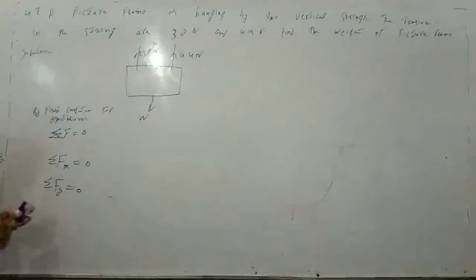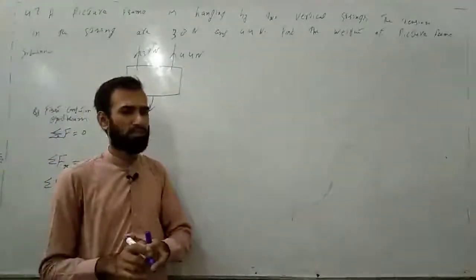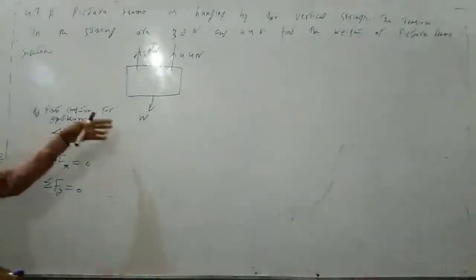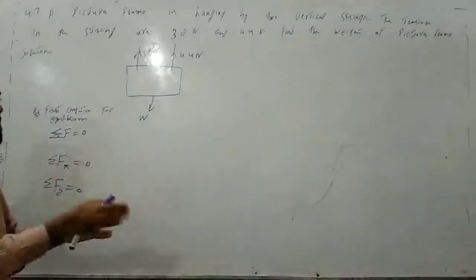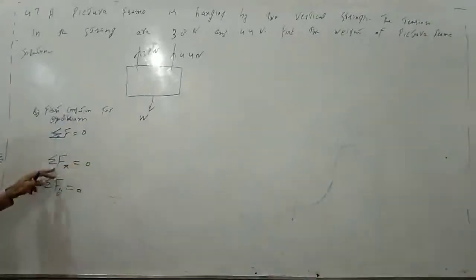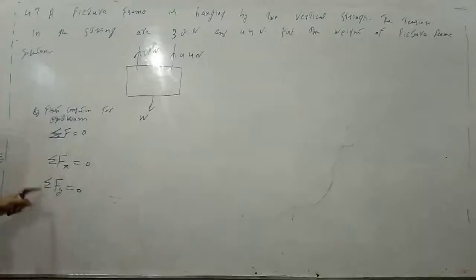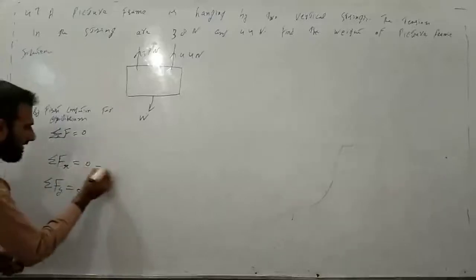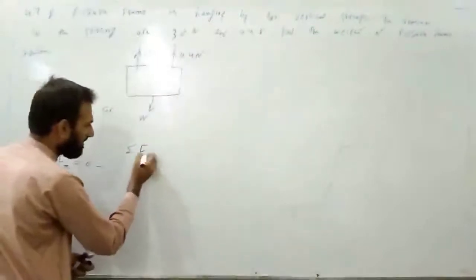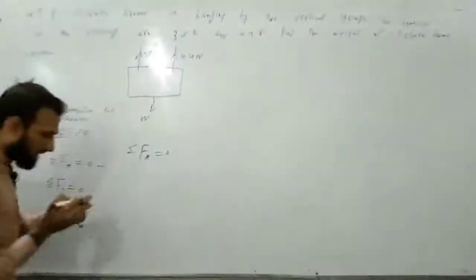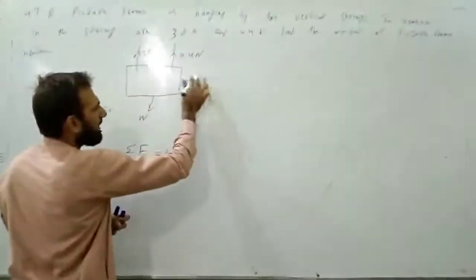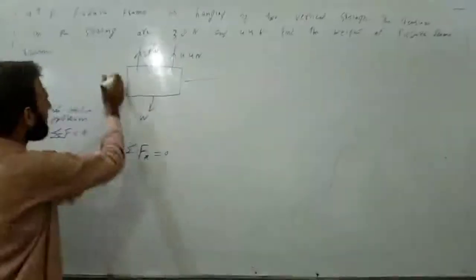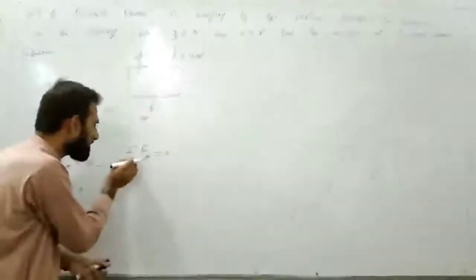We discussed this in detail when we covered the first condition for equilibrium. Now we just use the formula: sigma F is equal to zero means sigma Fx — forces along the x-axis — is also zero, and forces applied vertically also have a sum of zero. Now, looking at this frame along the x-axis, is any force applied? No, not in this direction either.